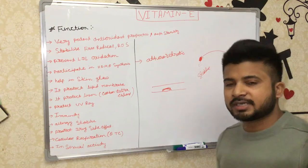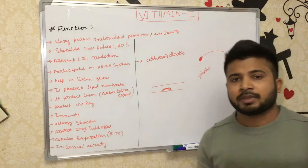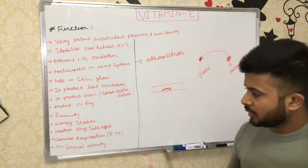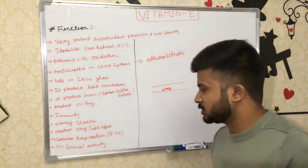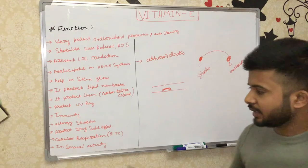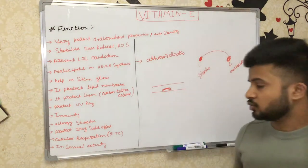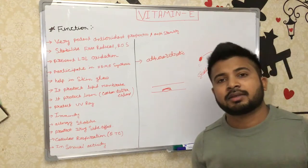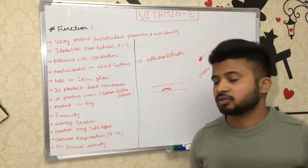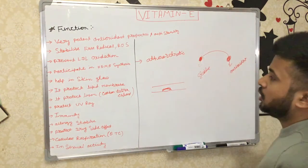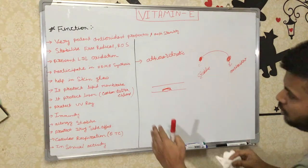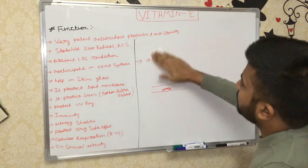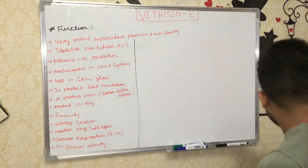Vitamin E protects against drug side effects — the liver and kidneys are the major detoxifiers, but Vitamin E also plays a role in drug side effects. It takes part in cellular respiration, specifically in the electron transport chain. Regarding sexual activity — due to its anti-sterility properties, it helps in sexual activity, protecting testosterone in men and estrogen in women through its antioxidant properties. These are the main major functions, along with other antioxidant-dependent functions.